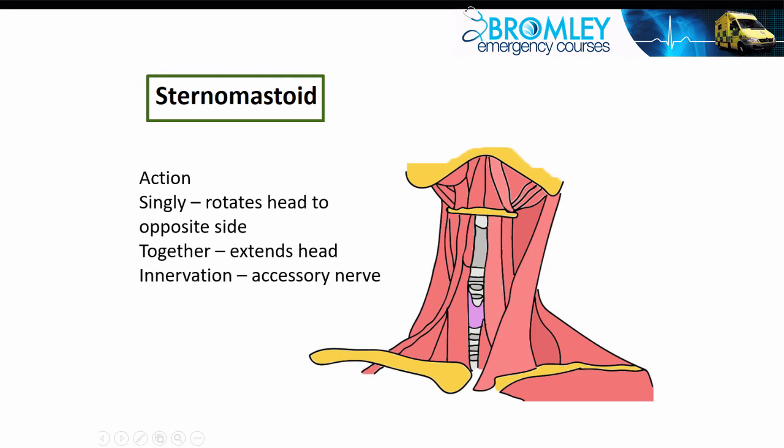The sternomastoid is innervated by the accessory nerve, the 11th nerve, one of the cranial nerves. We test this in a clinical examination by getting the patient to turn the head to one side and toward the other, putting the hand against the side of the head as a resistance to restrict the rotational movement. So we use it as a clinical neurological assessment.